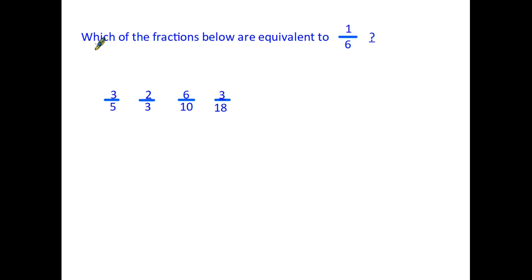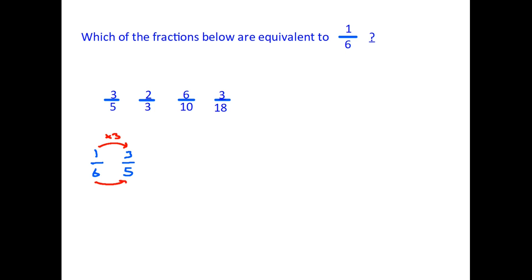Let's finish with a typical question such as you might find in a test. We are being asked which of the fractions below are equivalent to one sixth. The only way to solve this is to compare one sixth with each fraction using the rule we've just learned. Let's look at the first one: we are comparing one sixth with three fifths. To get from one to three on top, it has been multiplied by three. So we have to multiply the bottom by three: six times three is eighteen — it isn't five, therefore this fraction cannot be the equivalent.